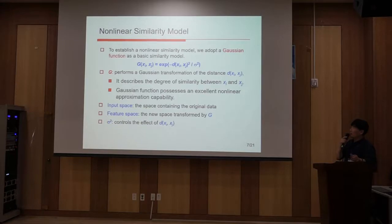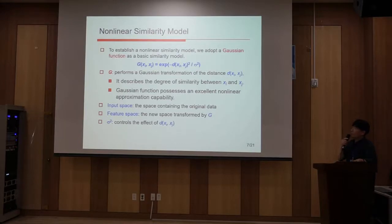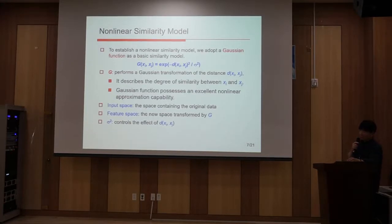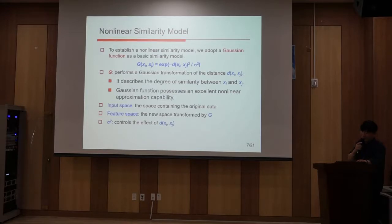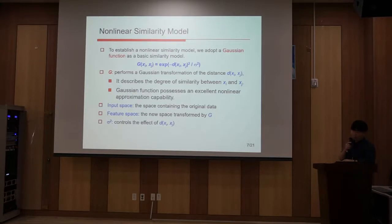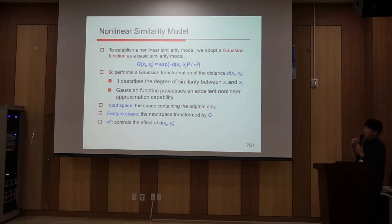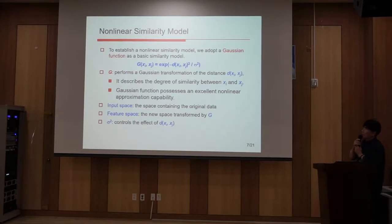In the equation, Xi and Xj are two data objects. The Gaussian function G means the similarity function between data objects Xi and Xj. The Gaussian function possesses an excellent nonlinear approximation capability. The exponential function in the Gaussian equation is more sensitive to local changes and gives better performance improvement with respect to human perception. In our model, we transform all data objects into Gaussian data space.